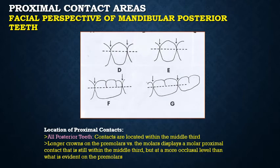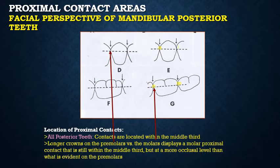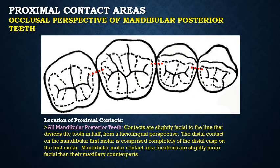The proximal contact areas of mandibular posterior teeth are also located in the middle one-third, similar to maxillary posterior teeth. Since premolars are taller, their contact areas are more cervically placed compared to molars, which are more occlusal — but both remain in the middle one-third.